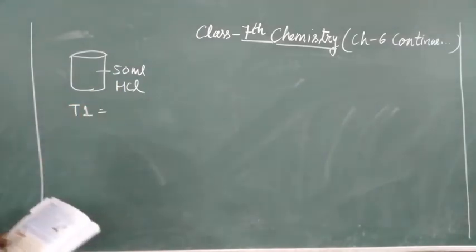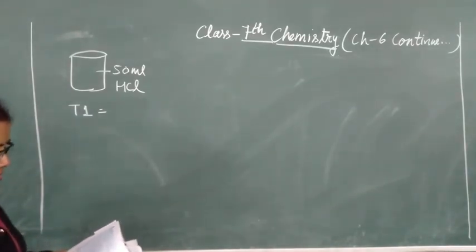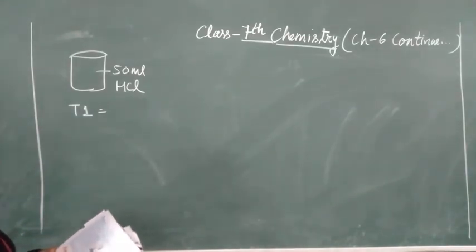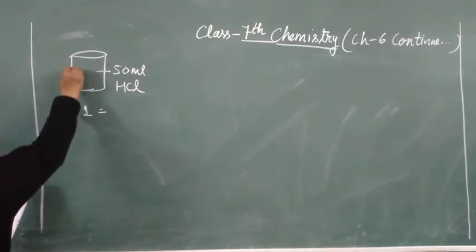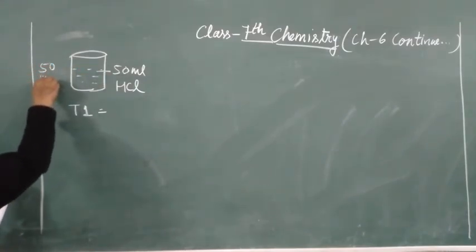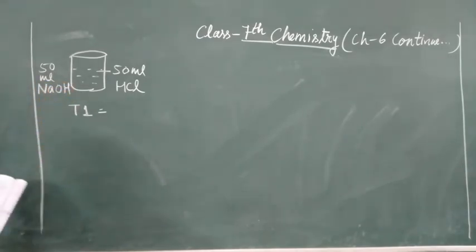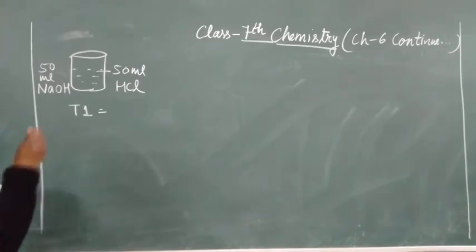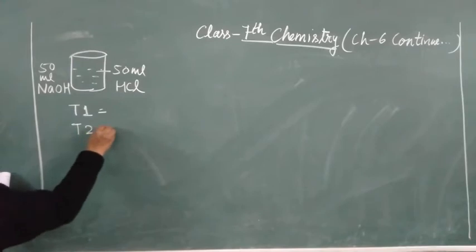Now measure 50 ml of sodium hydroxide and we have to add it into the plastic beaker containing hydrochloric acid. After adding sodium hydroxide, we have to note down the temperature and we have to write it as T2.